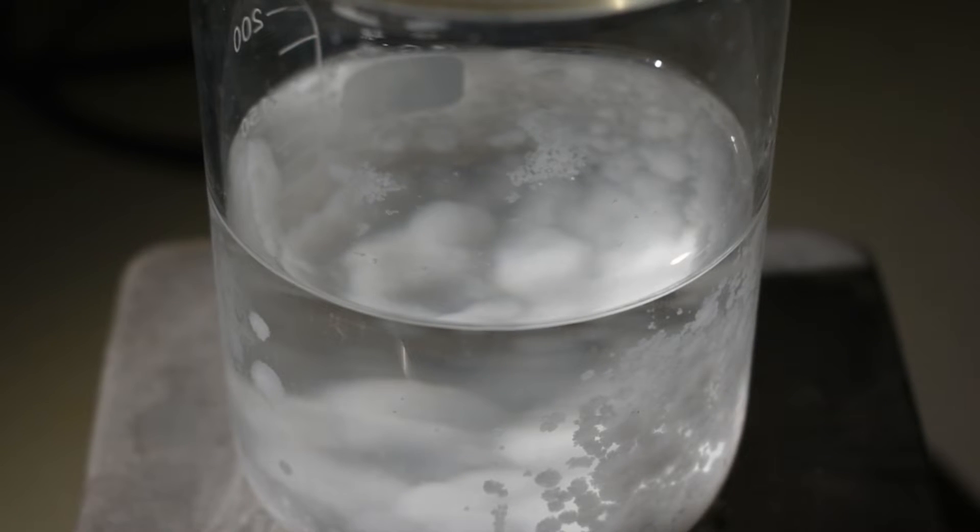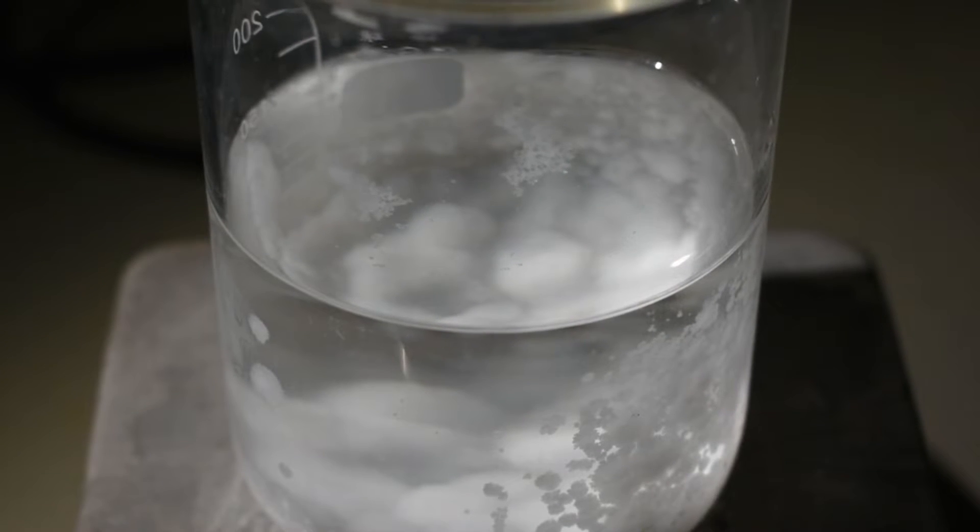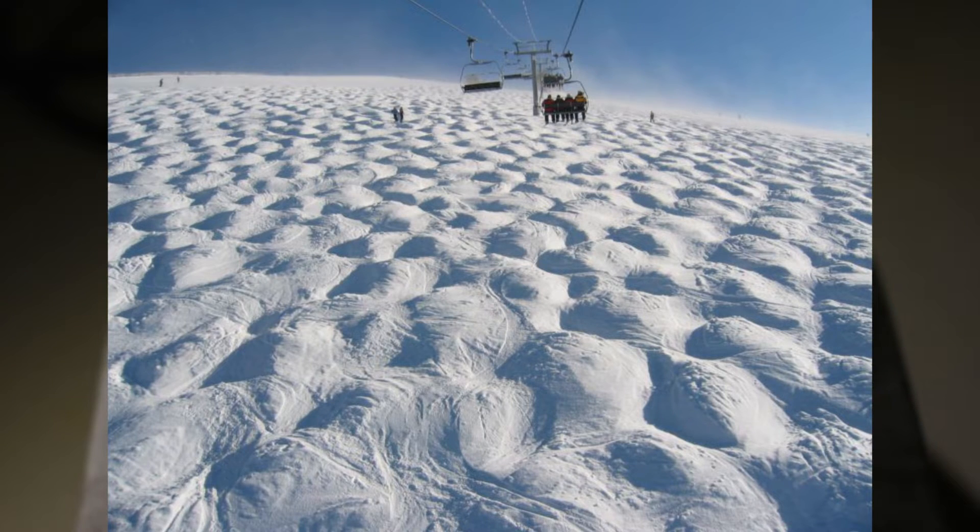So now all I'm left with is this large crystalline mass at the bottom of the beaker, which has a really interesting look to it. It almost looks like packed down snow, or those things that you see on ski hills, I think they call them moguls. Pretty interesting looking.